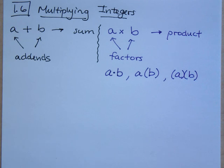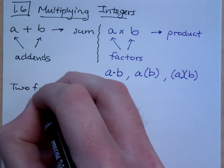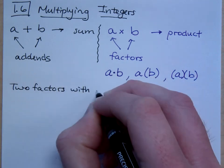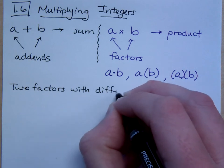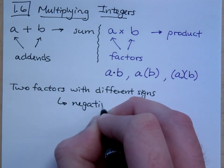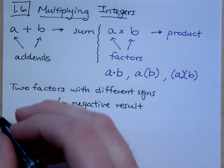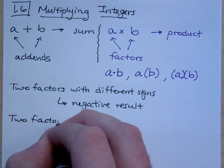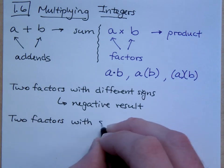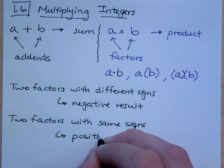So let's talk about how we multiply — here are the rules. If you're multiplying two factors with different signs, you will have a negative result. If the two factors have the same sign, then you have a positive result.